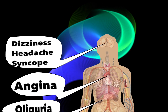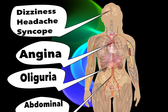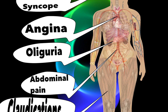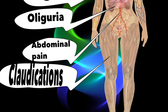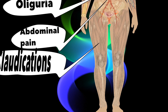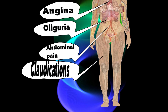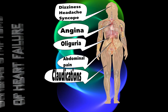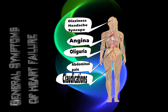Symptoms include dizziness and syncope. Chest symptoms include angina. Genitourinary symptoms include oliguria. Gastrointestinal symptoms include abdominal pain. In the musculoskeletal system, there is quadriceps wasting.